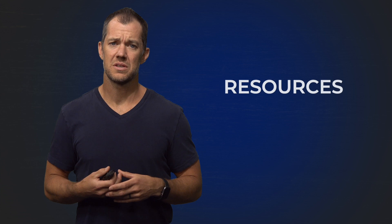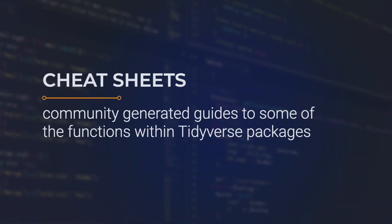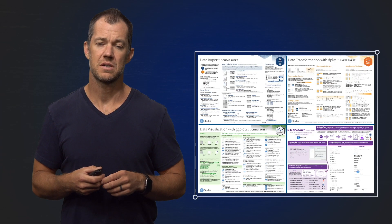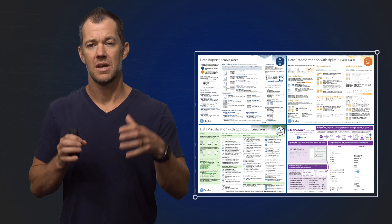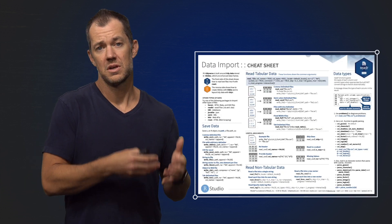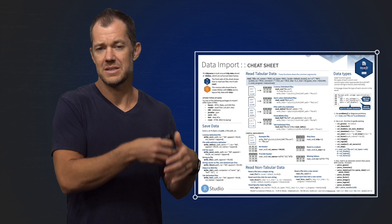You will likely need some resources along your data science journey and I want to show you some of those now. One of the first resources is something called the cheat sheet. These cheat sheets are community generated guides to some of the functions within these common tidyverse packages. You're not expected to know every single function within a package right from the start, so these cheat sheets oftentimes group these functions together. Let's say you want to import a data set — you know that you have a data set that you want to import and it's got these features.